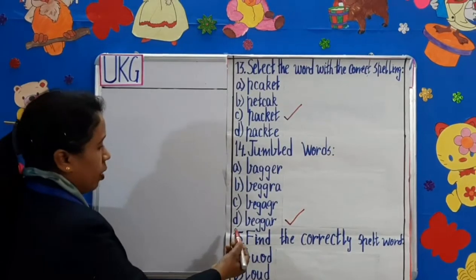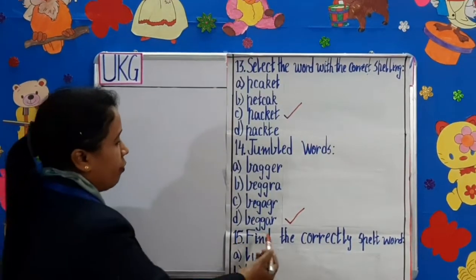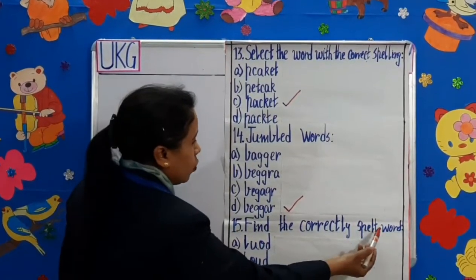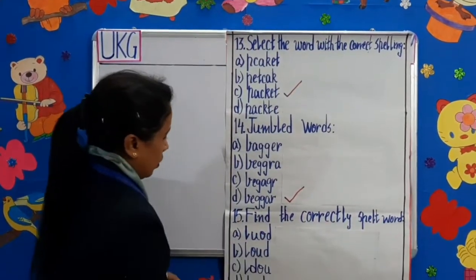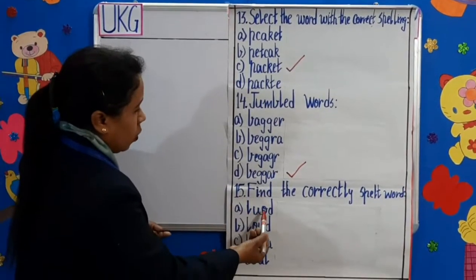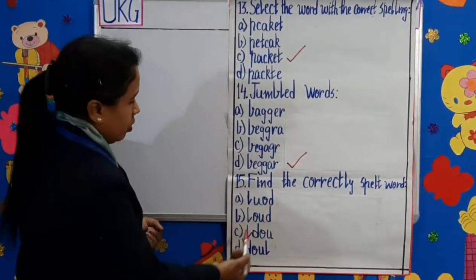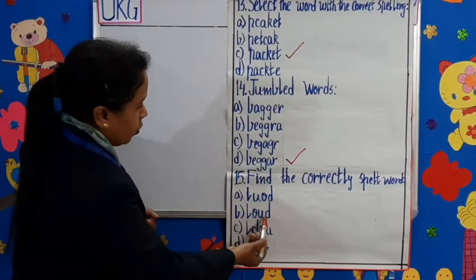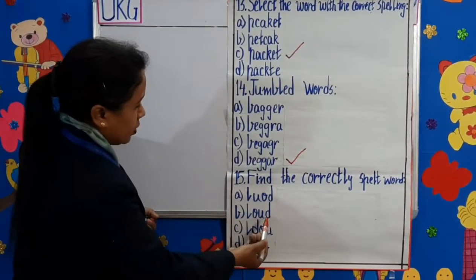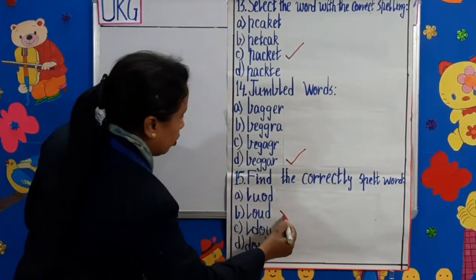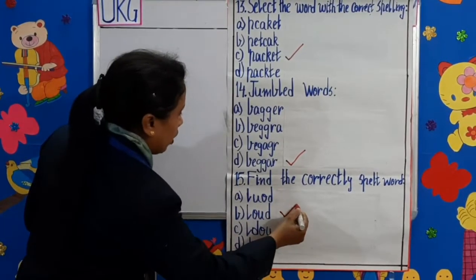Question number 15: Find the correctly spelled word. A-L-U-O-D — no. B-L-O-U-D — yes, it sounds correct. So, we will put a tick on it.